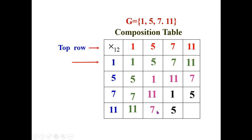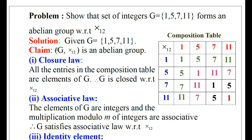In the last row, we have 5, 7, 11 already — the missing number is 1, confirmed since 11×11=121: when 121 is divided by 12, remainder is 1. Now, closure axiom: all entries in the composition table are elements of G. G has 4 elements, so the table has 16 entries. All 16 entries — 1,5,7,11,5,1,11,7,7,11,1,5,11,7,5,1 — are elements of G. Therefore, G is closed with respect to multiplication modulo 12.